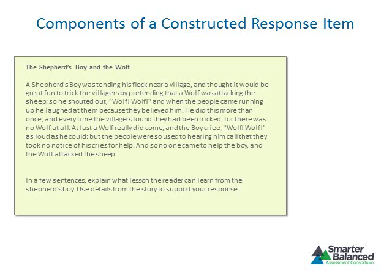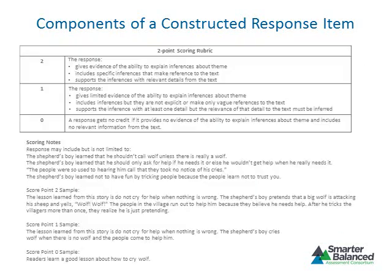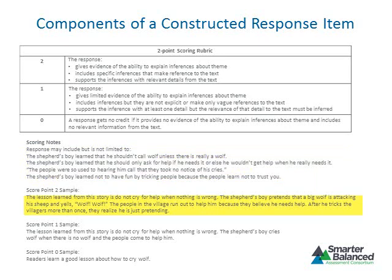All constructed response items are worth two to four points. Like selected response items, constructed response items have a stimulus and a stem. All constructed response items must also include a scoring rubric, scoring notes, and sample responses. The scoring rubric distinguishes between characteristics of responses that provide evidence of partially or fully developed skill. The scoring notes detail information that should be included in a correct response, and sample responses provide concrete examples for each point value. The top score sample should showcase a complete and thorough response.